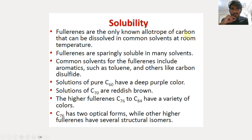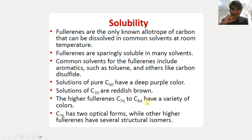Fullerenes are the only known allotropes of carbon that can be dissolved in common solvents at room temperature. Common solvents for fullerenes include toluene and carbon disulfide. Solutions of pure C60 have a deep purple color, solutions of C70 have a reddish-brown color, and the higher fullerenes from C76 to C84 have a wide variety of colors. C76 has two optical forms, while other higher fullerenes have several structural isomers.